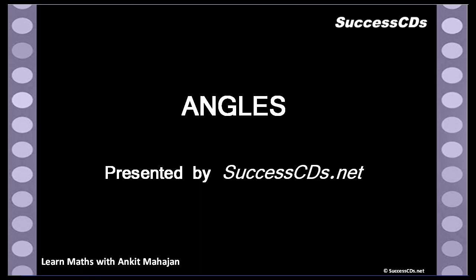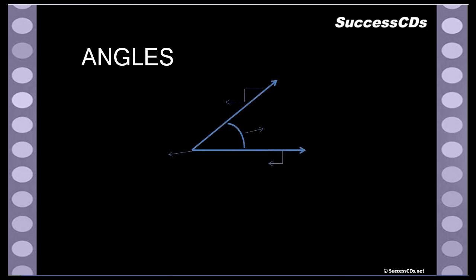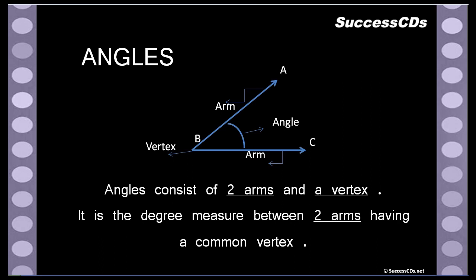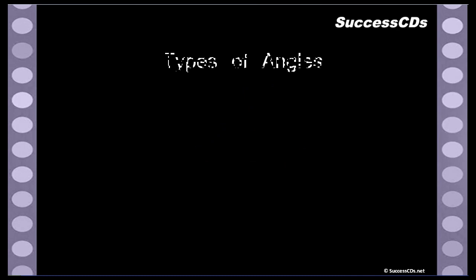Hello everyone, let's start a new chapter: angles. First of all, let's try and understand angles. An angle usually consists of two arms and a vertex. Here we have arm BA and arm BC with a common vertex. Point B is the vertex because it is the common point. The angle is the degree measure between two arms having a common vertex. Angles are usually denoted by a degree measure like 15 degrees, 30 degrees, and so on.